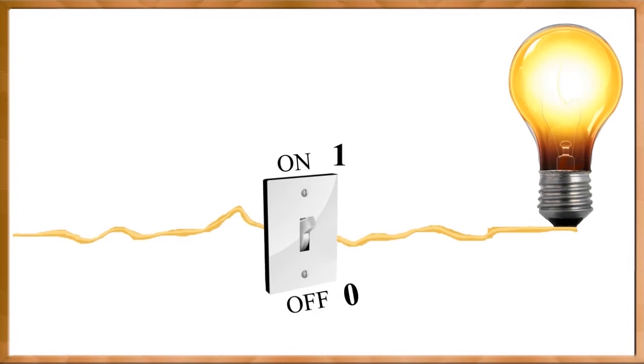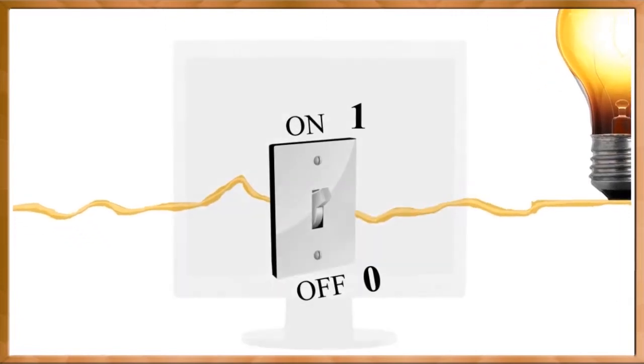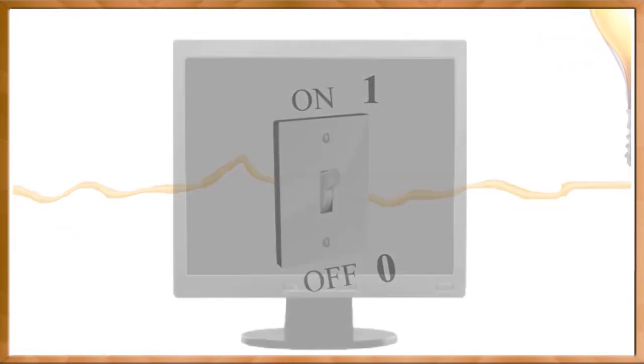Now you can understand that switches are used to represent data in the computer. The computer is an electronic device, or an electric unit. Therefore, it can only deal with data which is associated with electricity. You can simply understand the electric language is on and off — that is zero and one. As the computer is an electronic device, it understands zeros and ones only.